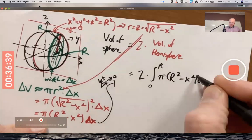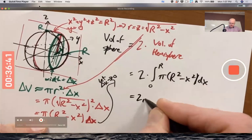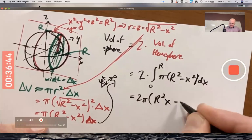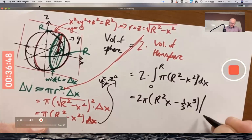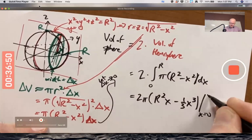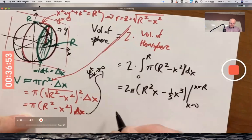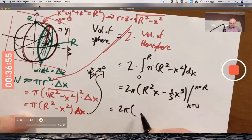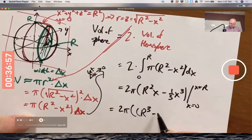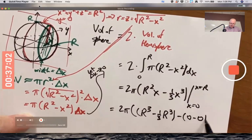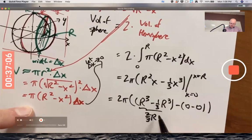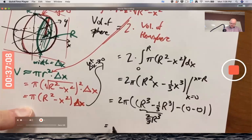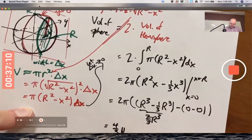π times capital R² minus x² dx. And yeah, we don't need a trig substitution there. Integrate with respect to x. Plug in the numbers. First plug in x equals R, then plug in x equals zero. That's a 2/3 R³. Lo and behold, we get 4/3 π R³.